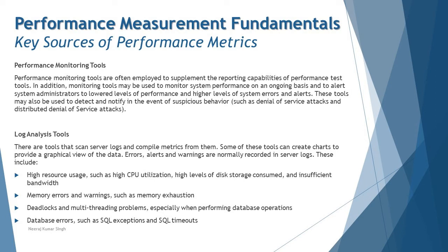Errors, alerts, and warnings are normally recorded in server logs. These include high resource usage such as high CPU utilization, high levels of disk storage consumed, and insufficient bandwidth. In LoadRunner, there is a tab that captures all these events from the server-side logs. Memory errors and warnings are also captured — for example, if you had 20 GB of RAM and the application under load from simultaneous users completely exhausted it, you would have no virtual or real memory remaining, causing performance to degrade.